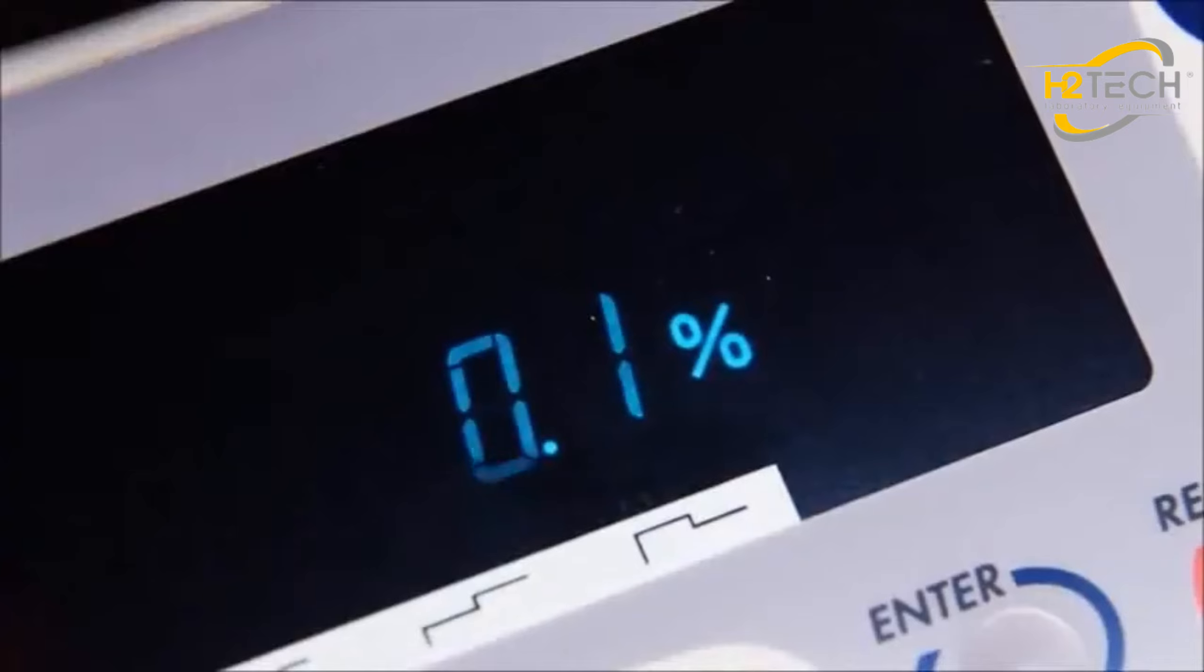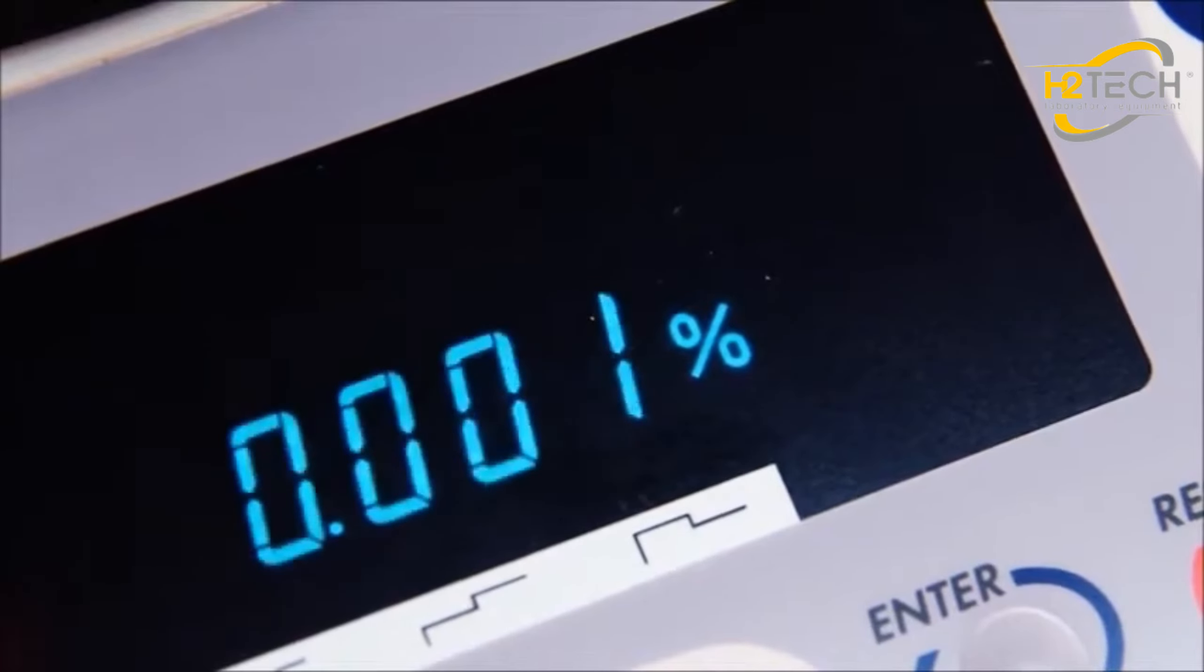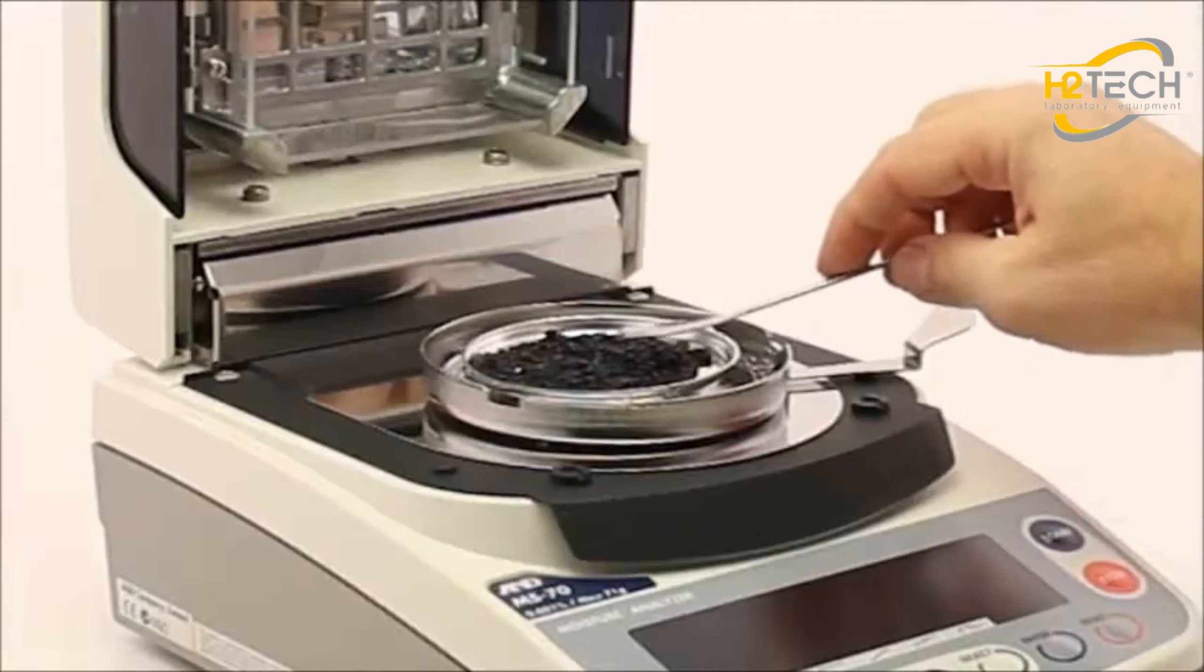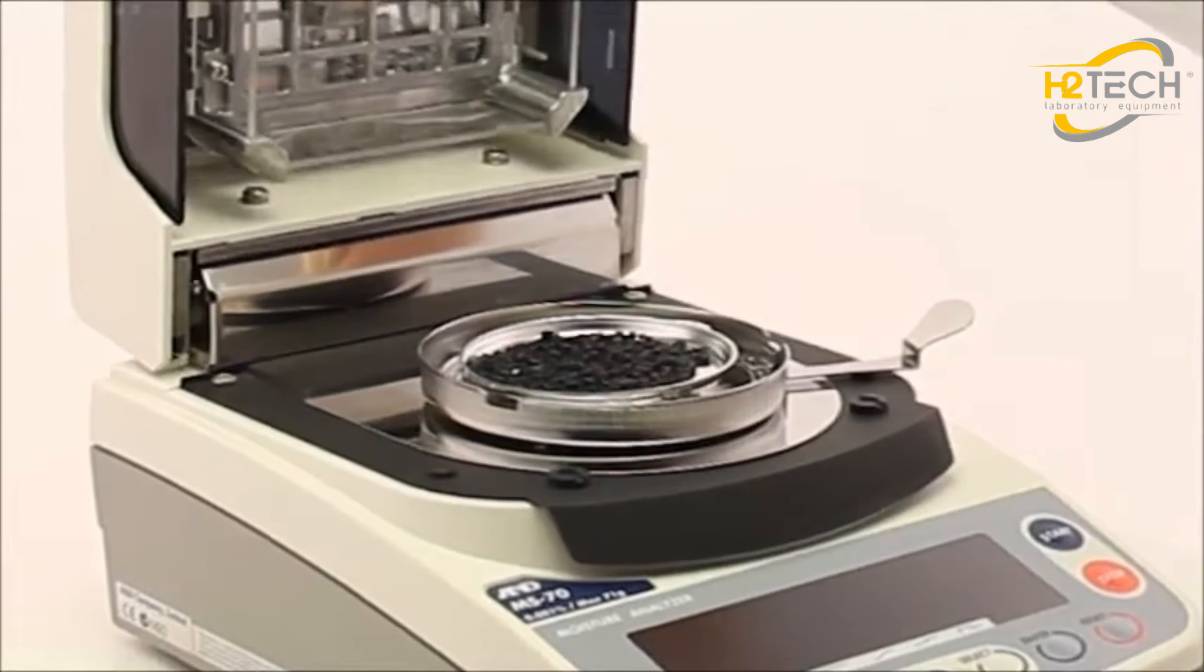The model MS-70 measures down to 0.001% moisture content with its resolution of 0.1 milligrams. Now even challenging low moisture substances like plastic resins can be conveniently characterized.